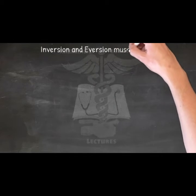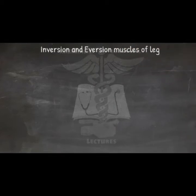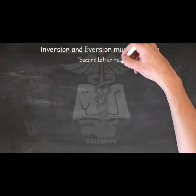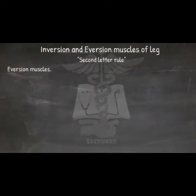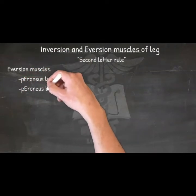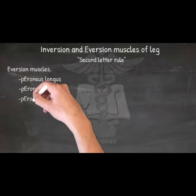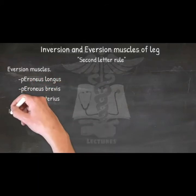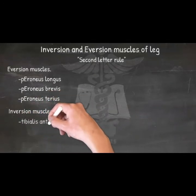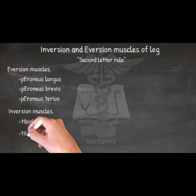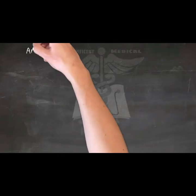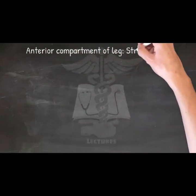Inversion and eversion muscles of the leg. Eversion muscles: Peroneus longus and peroneus brevis. Inversion muscles: Tibialis anterior and tibialis posterior.